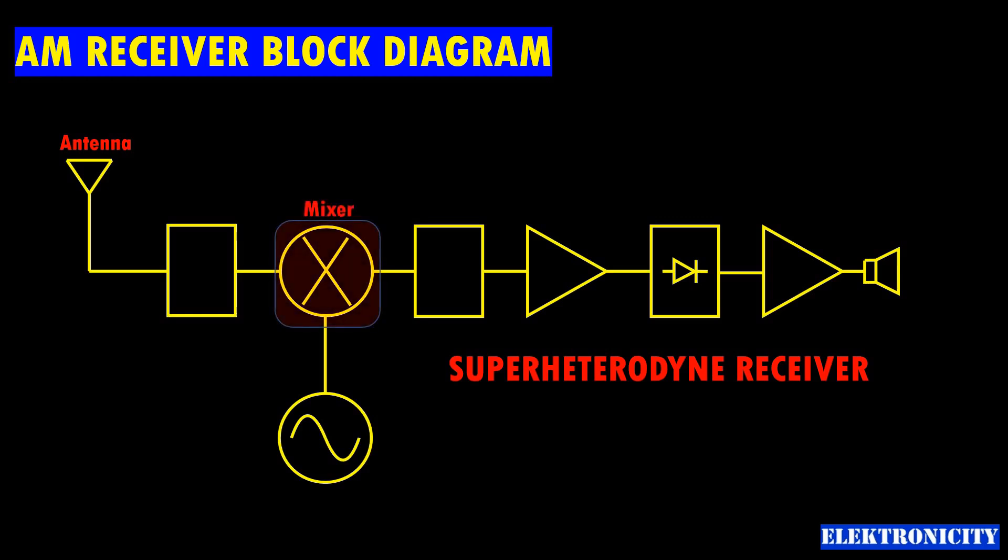A superheterodyne receiver is a type of radio receiver that uses frequency mixing to convert the received signal to a fixed intermediate frequency. When we open a superheterodyne AM radio, it will mainly consist of following blocks.